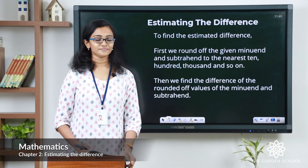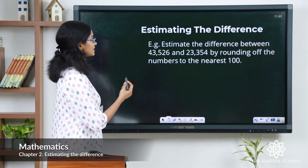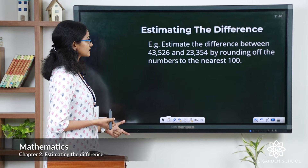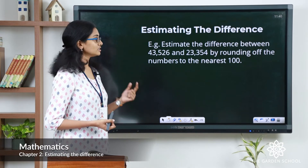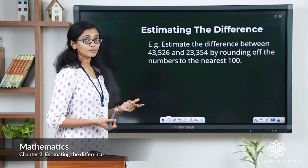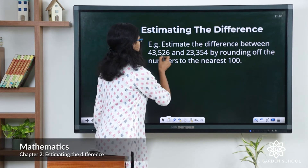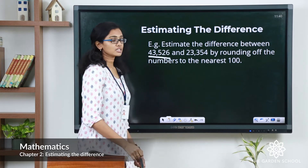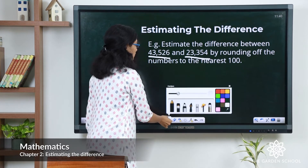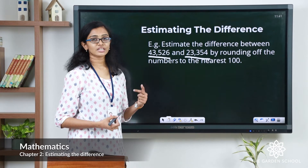Let's see that with an example. Look at this question: Estimate the difference between 43,526 and 23,354 by rounding off the numbers to the nearest hundred. So here we have the minuend, and here we have the subtrahend. You are asked to find out the estimated difference by rounding off to the nearest hundred.